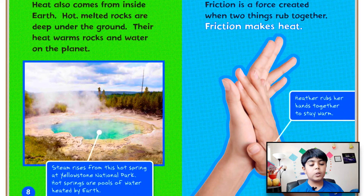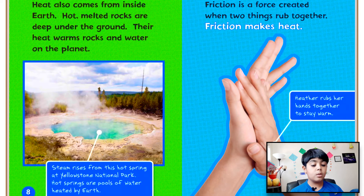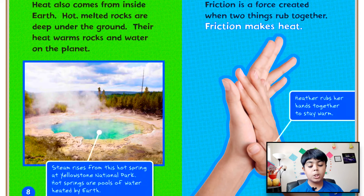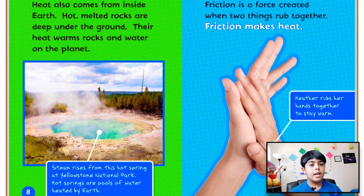Heat also comes from inside the earth. Hot melted rocks deep under the ground — their heat warms rocks and water on the planet. Steam rises from this hot spring at Yellowstone National Park. Hot springs are pools of water heated by the earth. That's similar to how a volcano works: there is hot melted rock underground, and sometimes it bursts out.